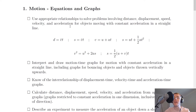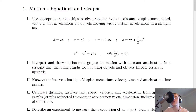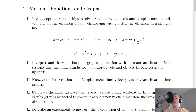You need to be able to use appropriate relationships to solve problems involving distance, displacement, speed, velocity and acceleration for objects moving with constant acceleration in a straight line. You'll recognise some of these equations from National 5: distance equals average speed times time; displacement equals average velocity times time; v equals u plus at (first equation of motion); s equals ut plus a half at squared (second equation); v squared equals u squared plus 2as (third equation); and s equals a half times (u plus v) times t, which isn't used as often as the other three. You need to apply all of these appropriately and be able to define terms like displacement, velocity and acceleration.